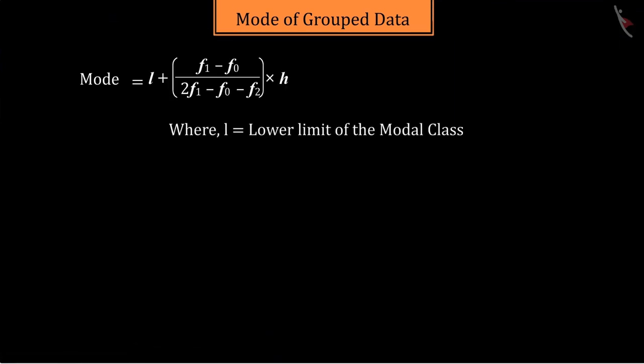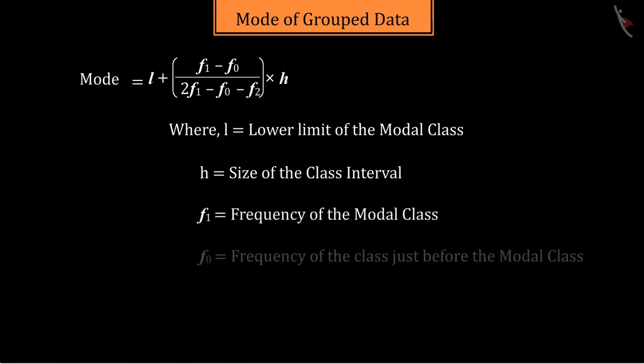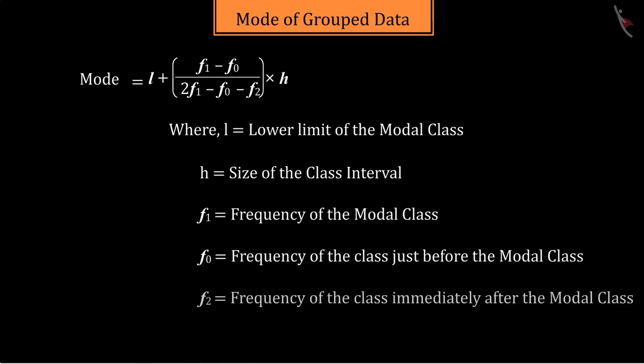Where L is equal to the lower limit of the modal class, H is the size of the class interval, F1 is the frequency of the modal class, and F0 is the frequency of the class just before the modal class.